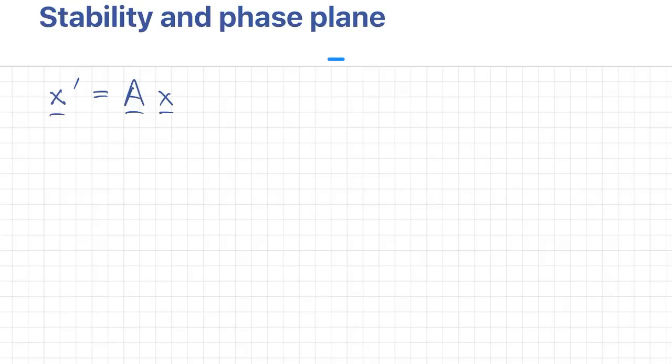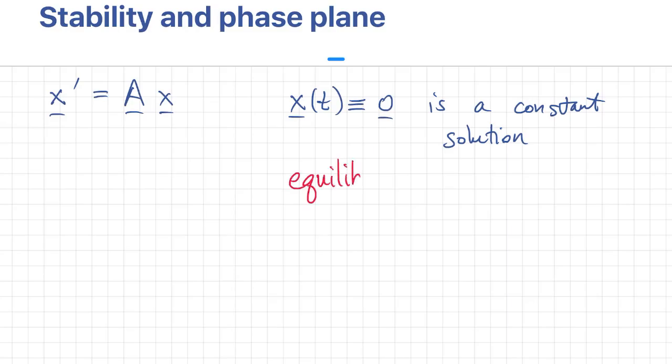When we look at the homogeneous problem x prime equals Ax, it's pretty trivial to see that x being just equal to zero is a solution, it's a constant solution, because then its derivative is equal to zero, both sides of the equation equal zero.